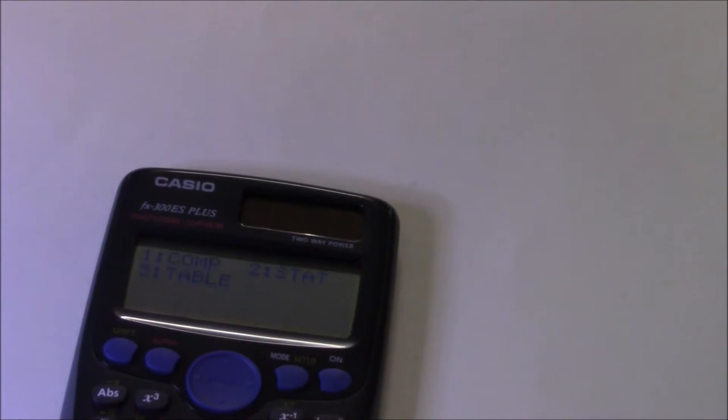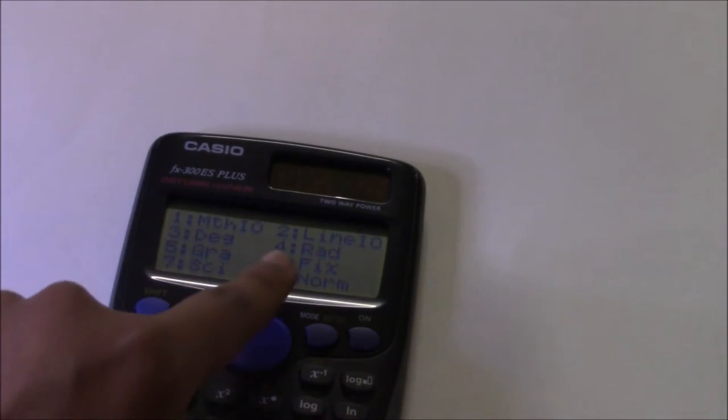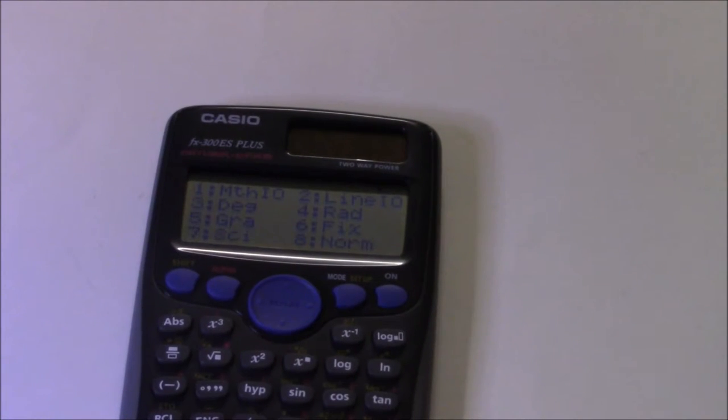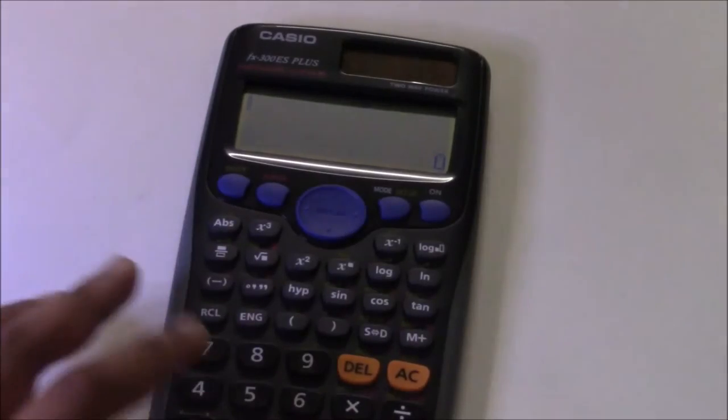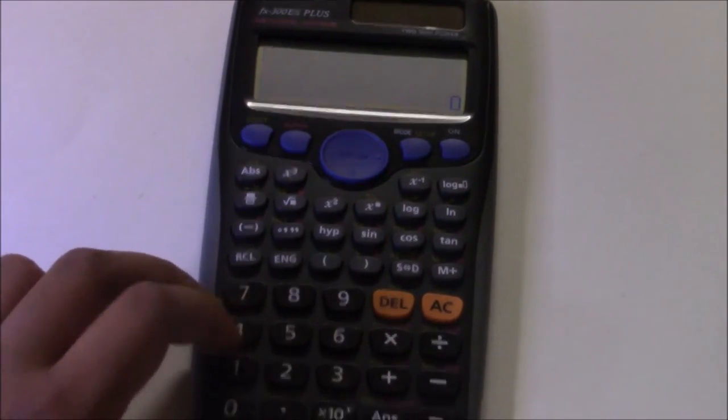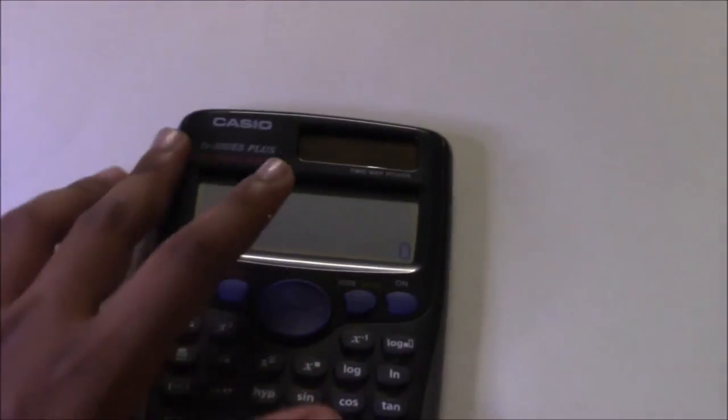Okay, wait a second. Let's just go back. So instead I'm going to go to shift mode setup. Then go to number 2, line 10. So we're actually going to have to navigate like that. So now, after pressing number 2, that's down here, you have to actually insert virtually a fraction.